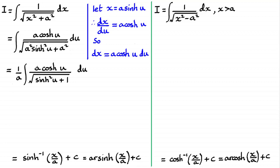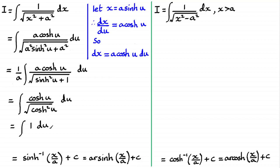The a's cancel, and we're left with the integral of cosh(u) over the root of cosh²(u). The root of cosh²(u) is cosh(u), so the cosh(u) terms cancel, reducing to the integral of 1 with respect to u, which gives u plus a constant c. Since sinh(u) = x/a, we have u = arcsinh(x/a), giving the result arcsinh(x/a) + c, or equivalently arcsinh(x/a) + c.